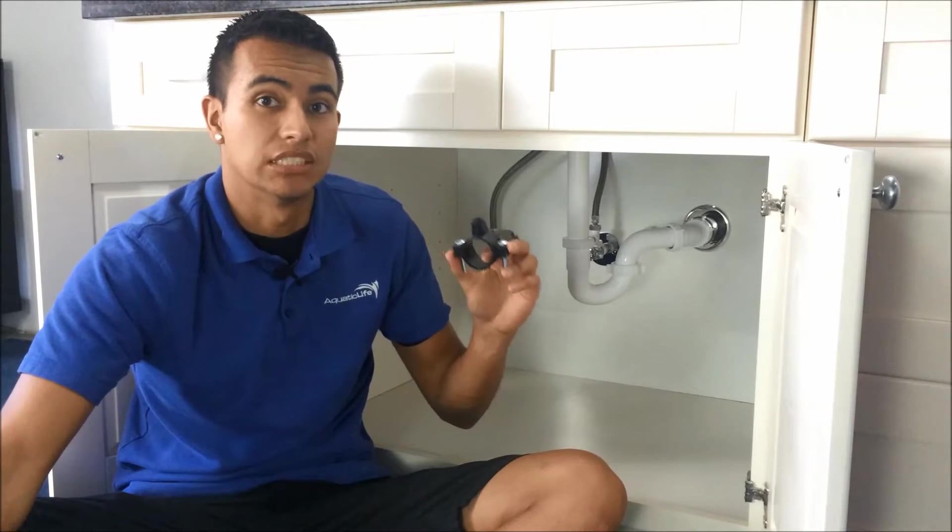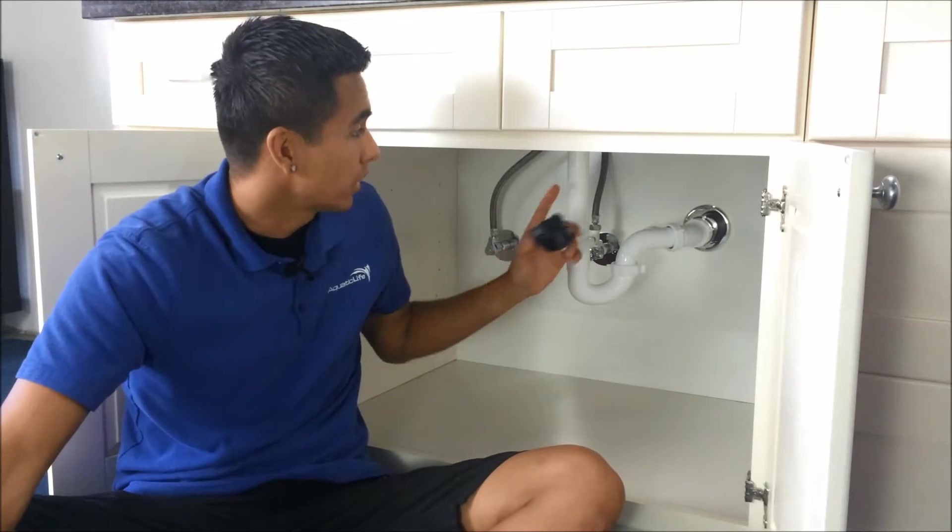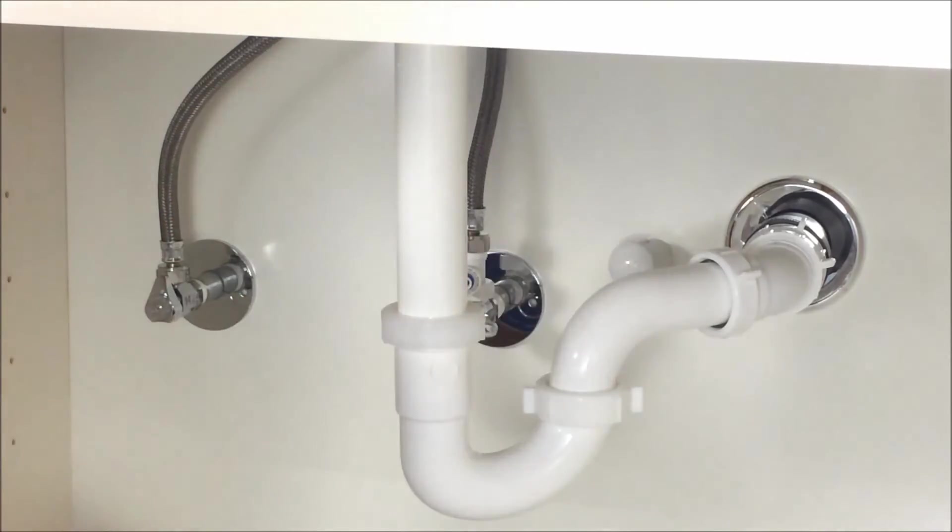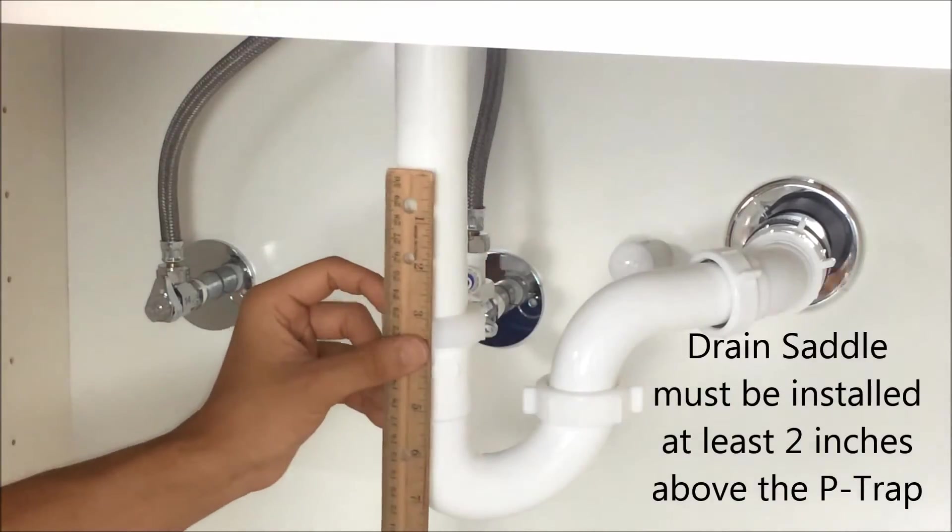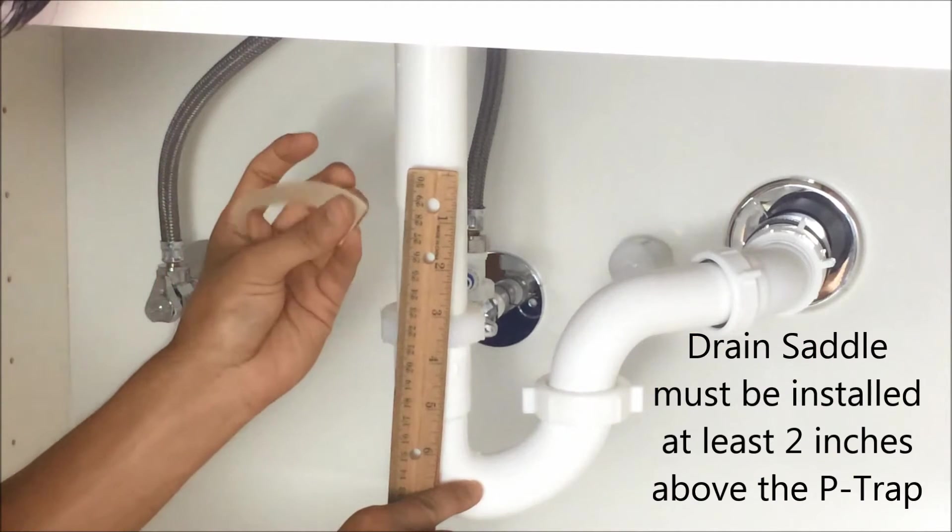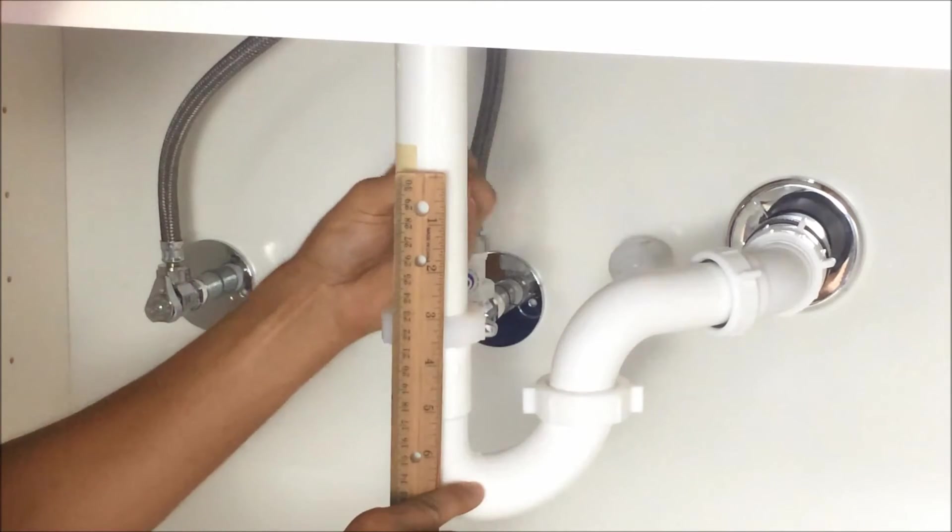So what this nifty little gadget is, is a drain saddle. What this is going to allow us to do is take the wastewater and go directly into our drain. Your drain saddle needs to be at least two inches above this P-trap here. So I'm going to take my ruler, measure three inches to be on the safe side, and then place the tape on the side where your wastewater should be.